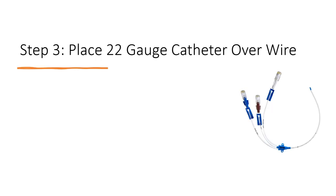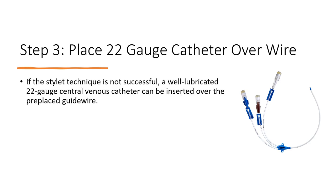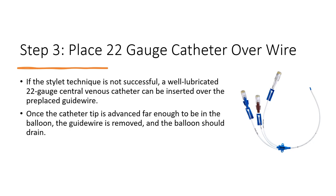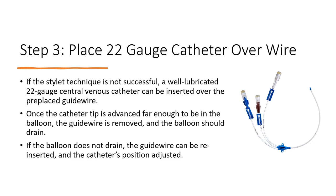Step 3: Place a 22-gauge catheter over the guide wire. If the stylet technique is not successful, a well-lubricated 22-gauge central venous catheter can be inserted over the pre-placed guide wire. Once the catheter tip is advanced far enough to be in the balloon, the guide wire is removed and the balloon should drain. If the balloon does not drain, the guide wire can be reinserted and the catheter's position adjusted.